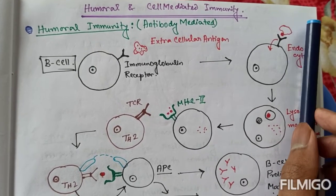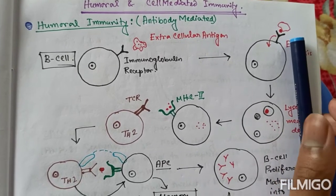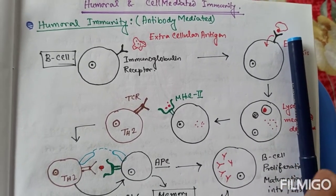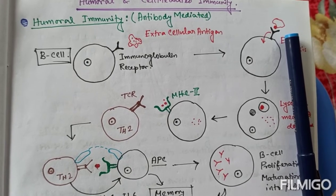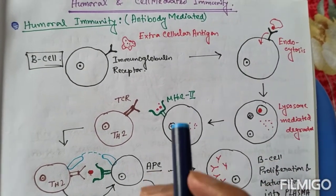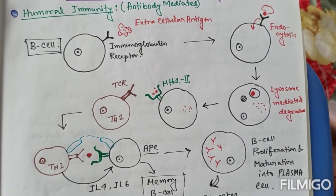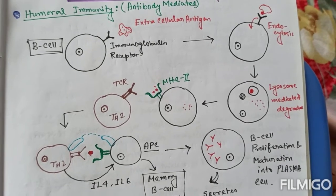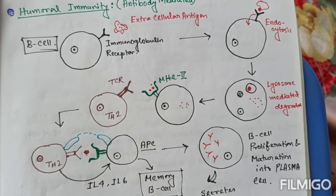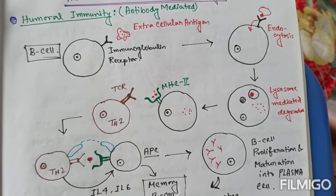So this can also be called as B-cell Mediated Immunity. And here interestingly the immunity is mainly confined against the extracellular antigen. So extracellular antigen like any toxins released by microbes or antigen present over the microbial plasma membrane. The antigen which is present outside the cell.